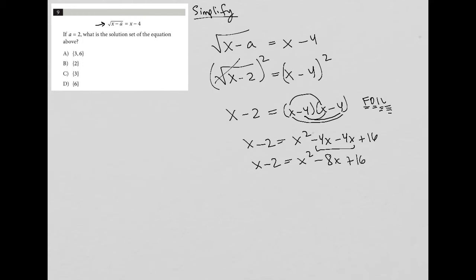Let's combine some more terms. So I'm going to subtract x from both sides, and I'm going to add 2 to both sides and make the left side equal to 0. So this is 0 equals x squared minus 9x plus 18. And then to solve this, I have to factor it.